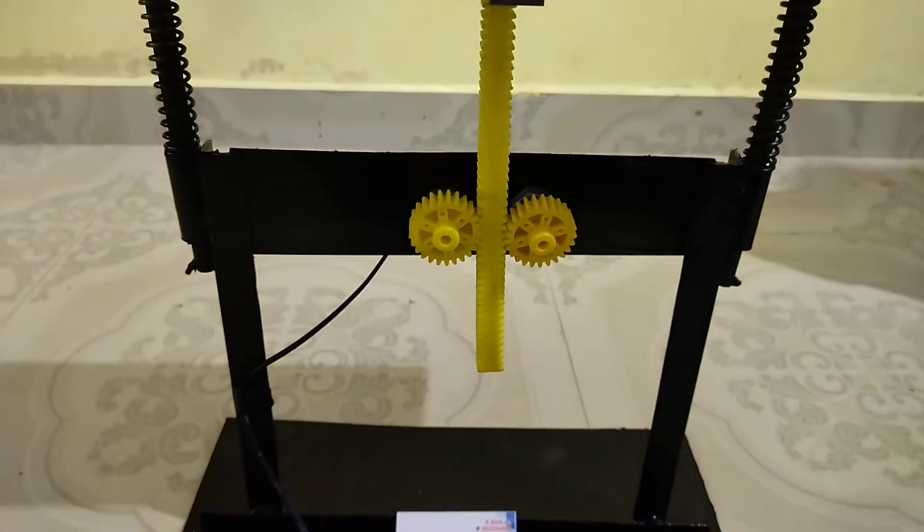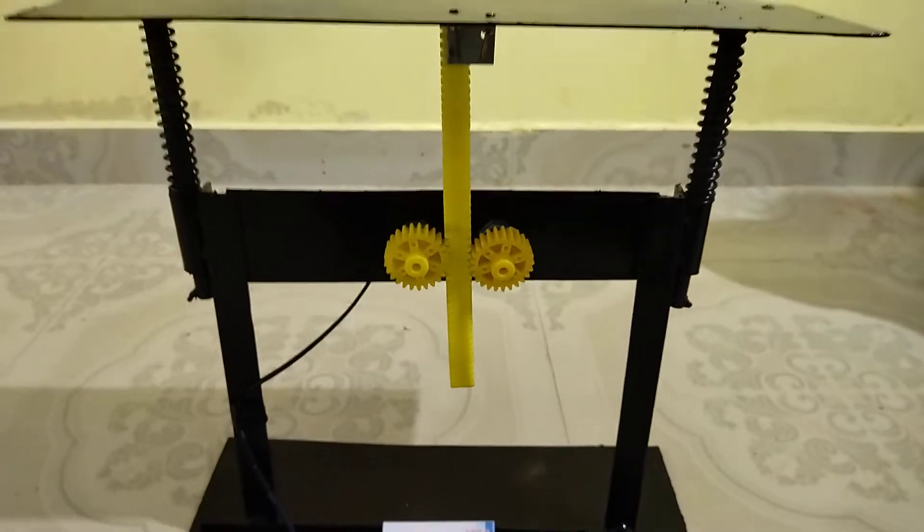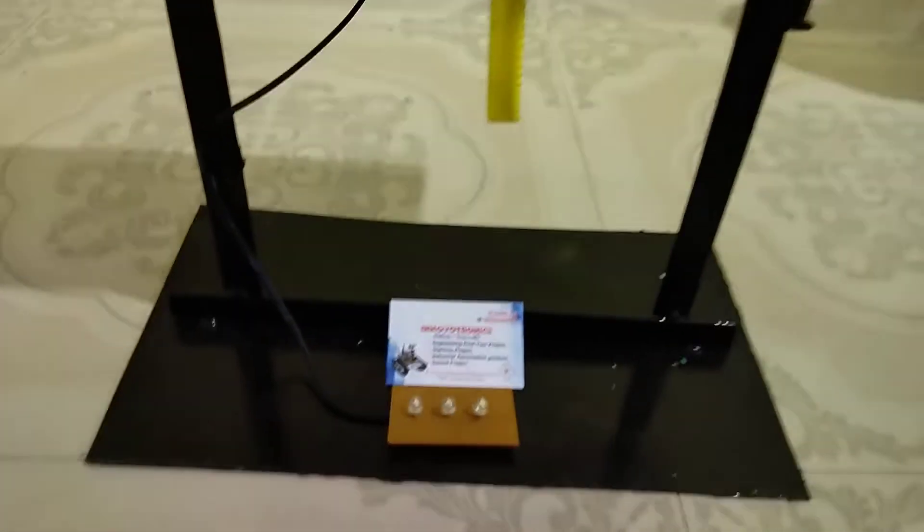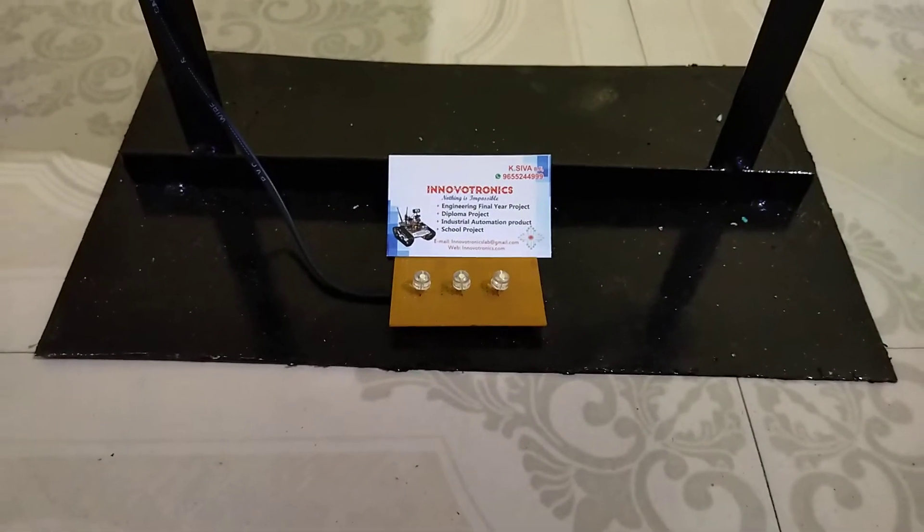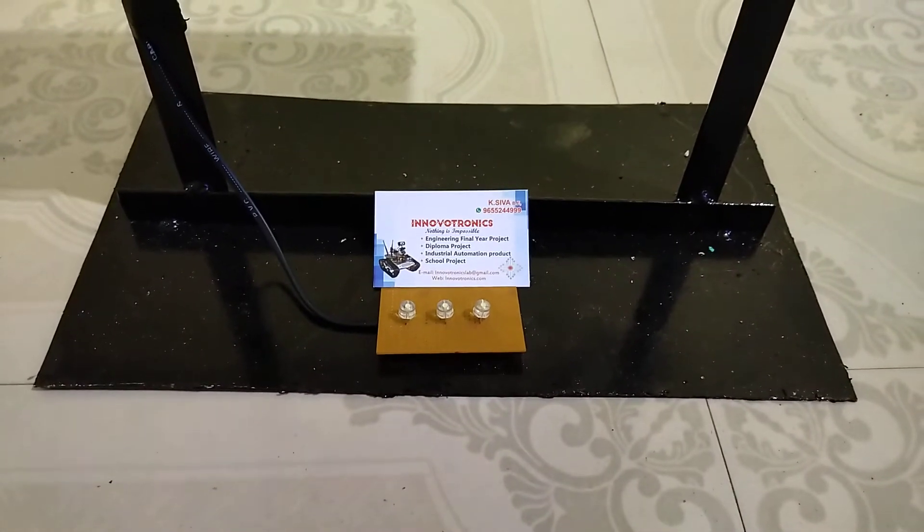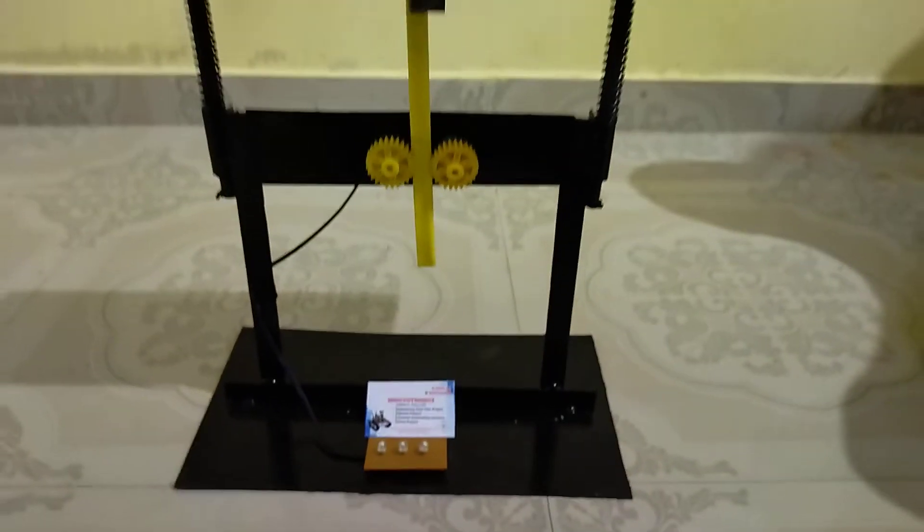Our DC dynamo is getting rotation. The electricity will generate and then this LED will glow. This LED glowing denotes power is generating. I am going to show the demo.